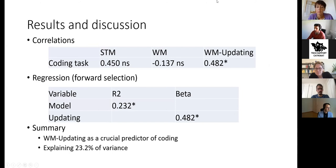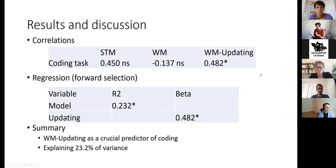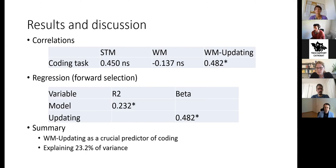The results showed that the coding task was not correlated with digit span forward or digit span backward, but it was correlated with working memory updating. In a forward selection linear regression model, working memory updating explained over 23% of variance in coding performance — suggesting that the important factor is not simple storage but something more complex: the ability to update the contents of working memory.